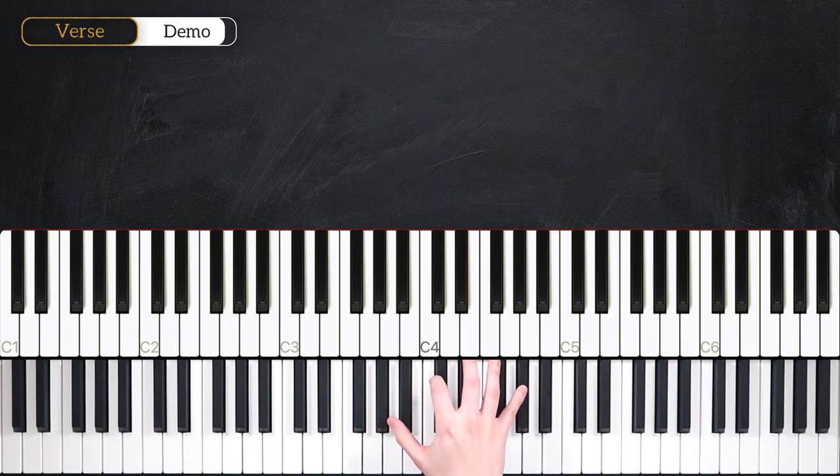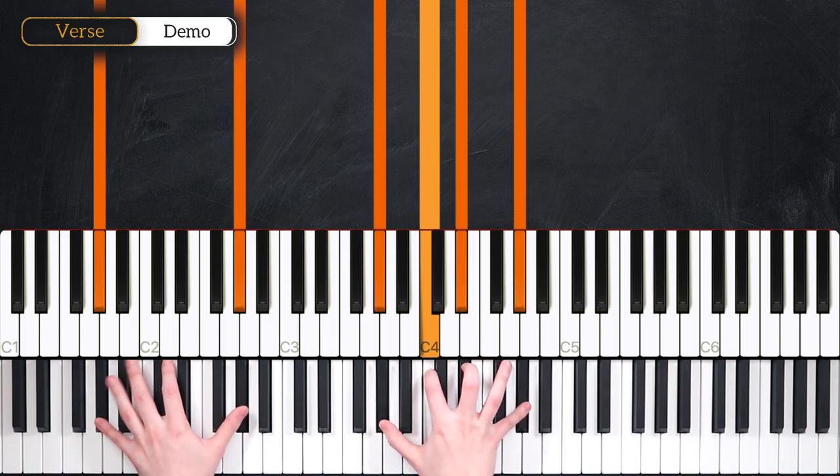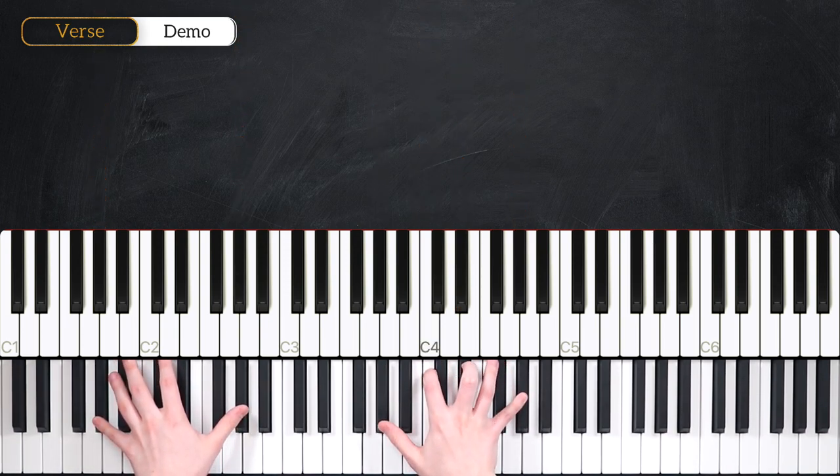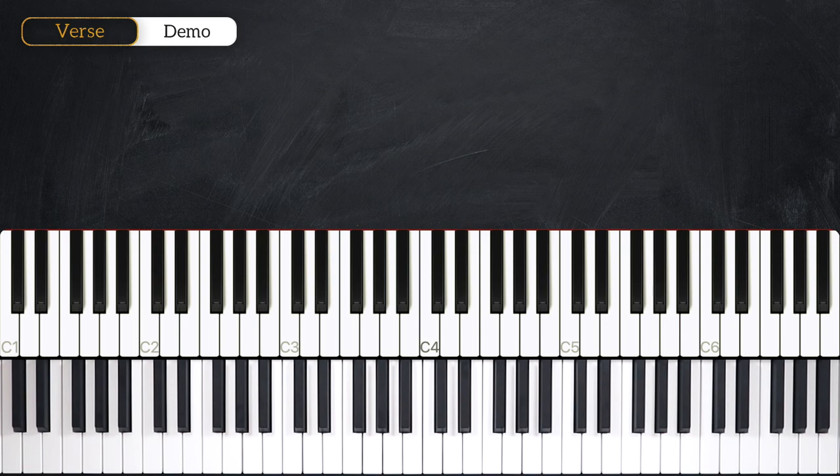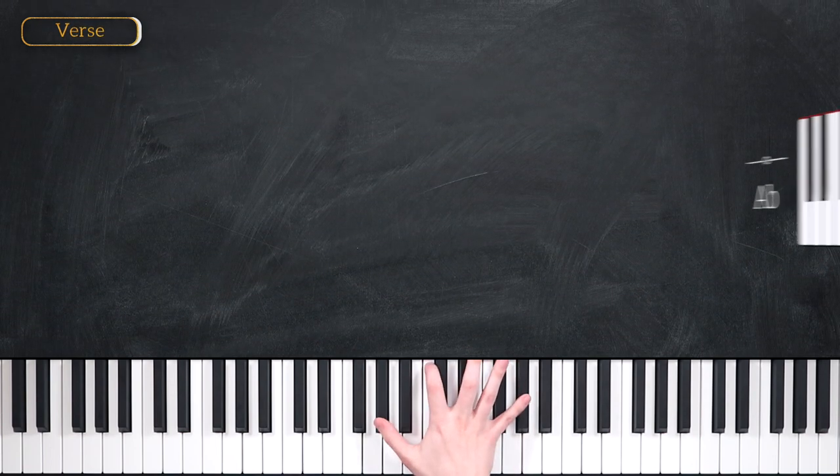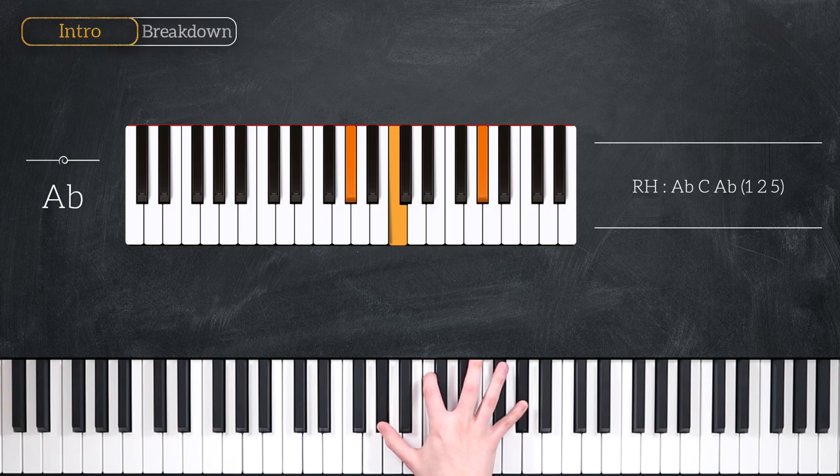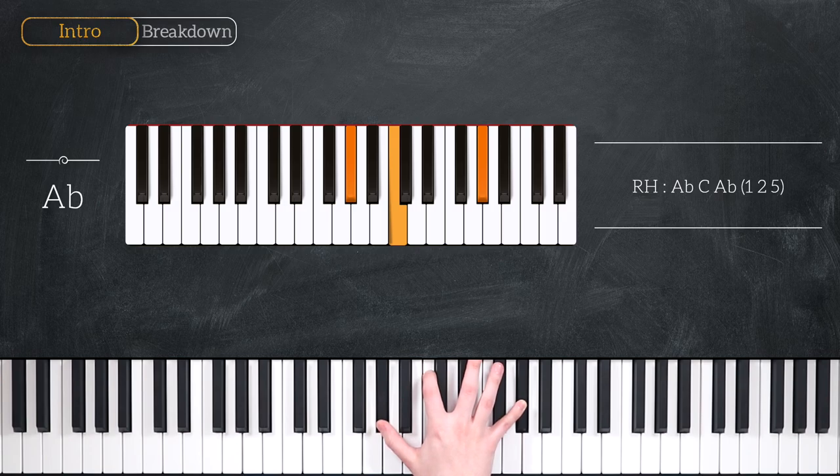Now let's head into the breakdown. We're in the key of A flat major, and there's going to be three main chords in this section. We're going to start on an A flat major chord. And we're only going to use the right hand for chords in this section. The left hand comes in as we move into the chorus.